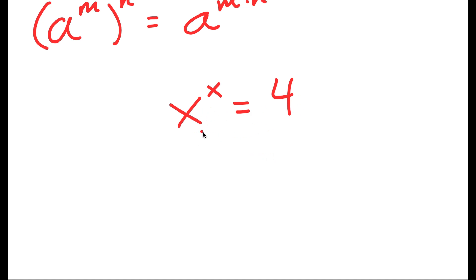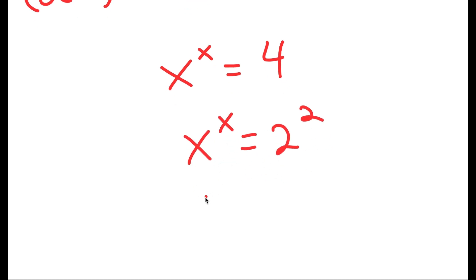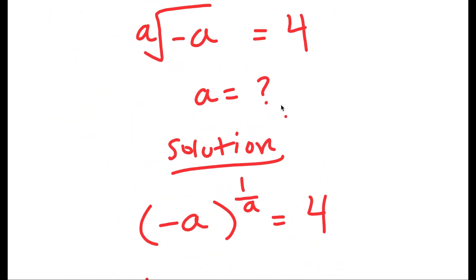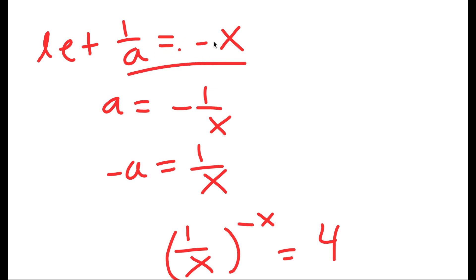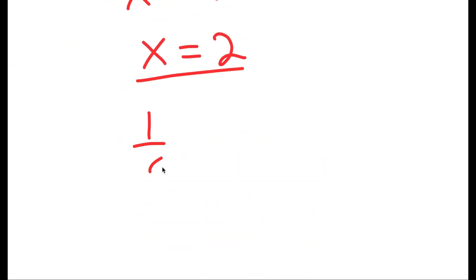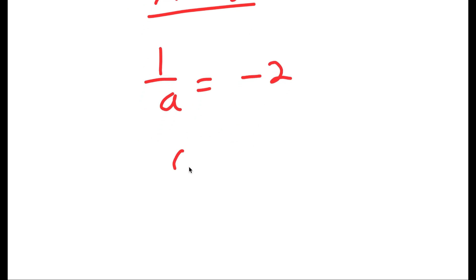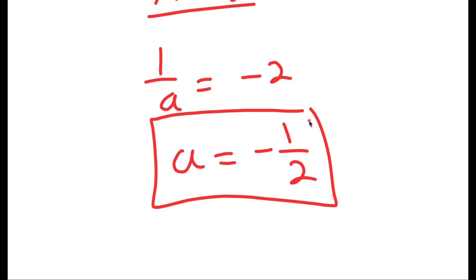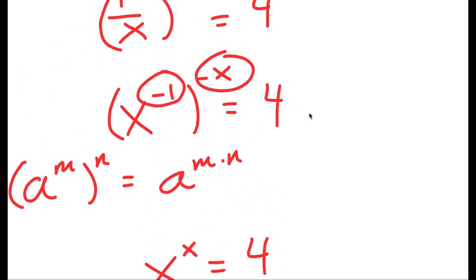This is basically asking: what number to the power of that same number is equal to 4? And 4 is the same thing as 2 squared, meaning x is equal to 2. However, we aren't done yet because we're trying to find the value of a, not x. We let 1 over a equal to negative x, so if 1 over a equals negative 2, then a is equal to negative one half.